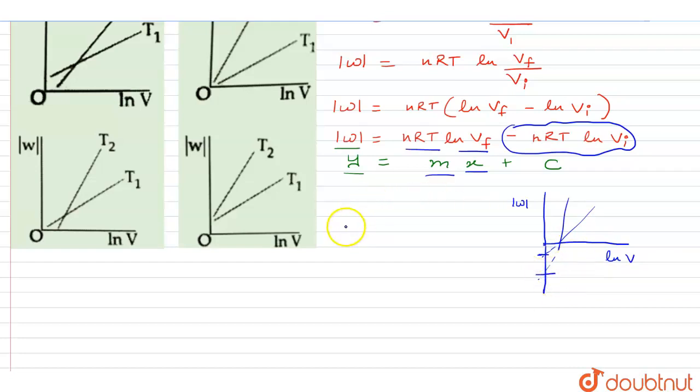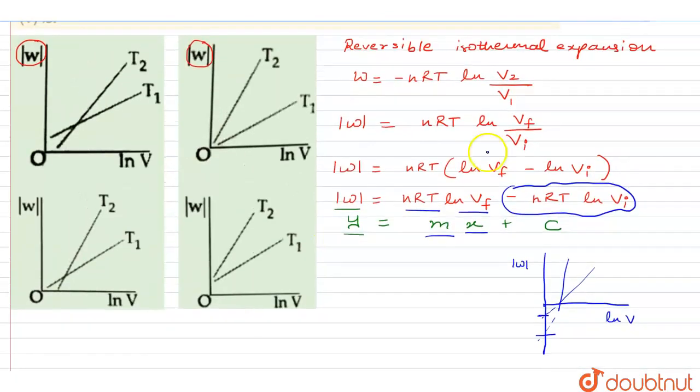So accordingly, we would be analyzing our plots given. So the first one shows us that it has on extrapolation, T2 value is actually being extrapolated in the negative axis, but T1 is on the positive, which is really not possible. So my first option is not the correct depiction.